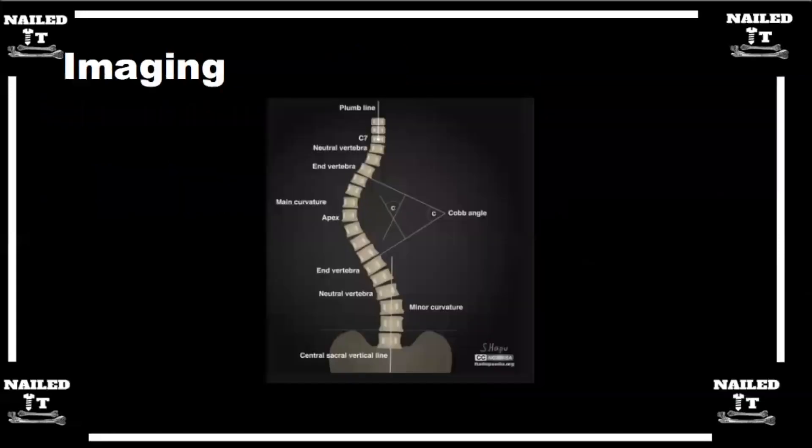What are we looking for when we are looking at a spine PA? There's a lot of terms going around like stable vertebra, apical vertebra, Cobb angle. What are these things?